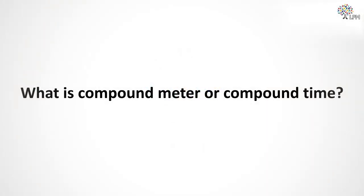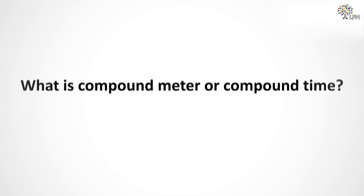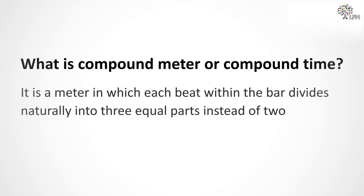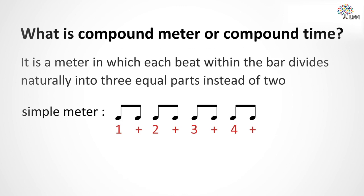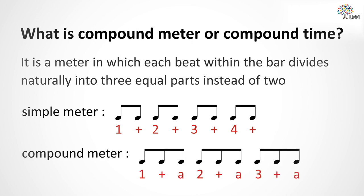What is compound meter or compound time? Well, it is a meter in which each beat within the bar divides naturally into three equal parts instead of two, like the simple meters we've already learned where you count them as one and two and three and four and. That is, each beat contains a triple pulse.